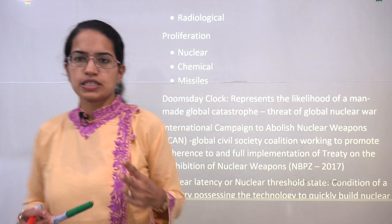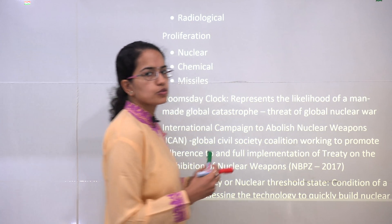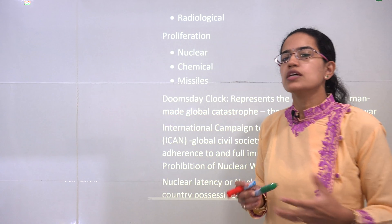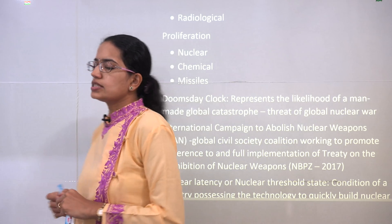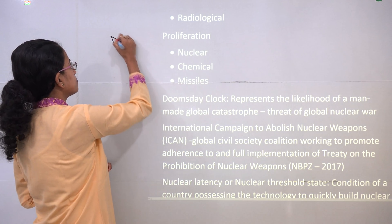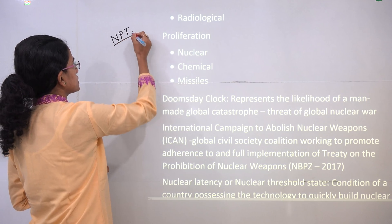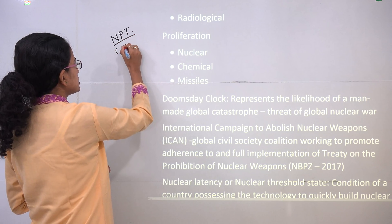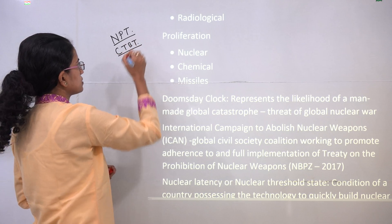There are two major treaties we would discuss today, and then we will come on to the four major arrangements or groups. The two major treaties are: first, the NPT — the Nuclear Non-Proliferation Treaty — and the other is CTBT, the Comprehensive Nuclear Test Ban Treaty.